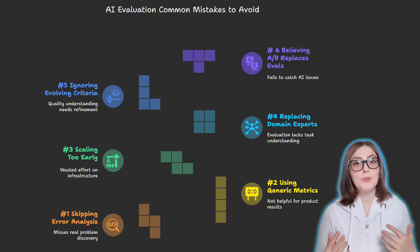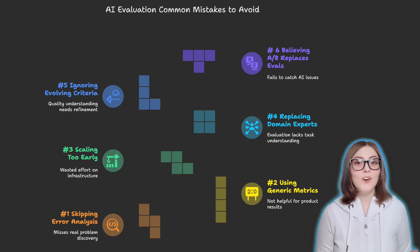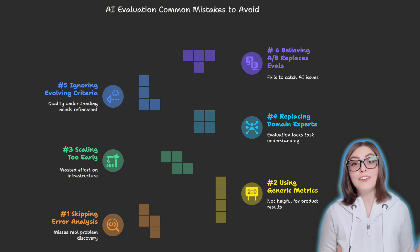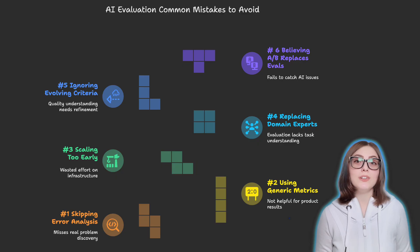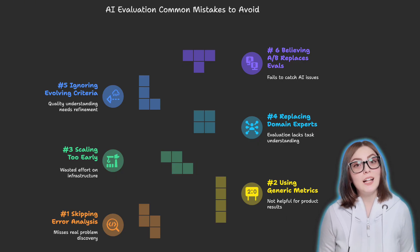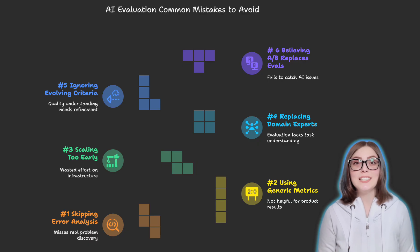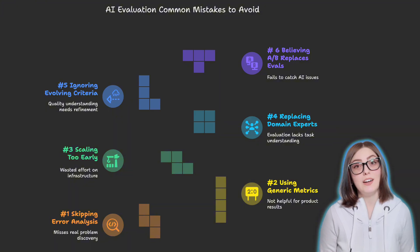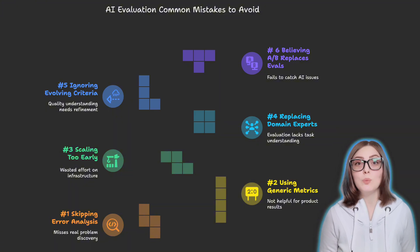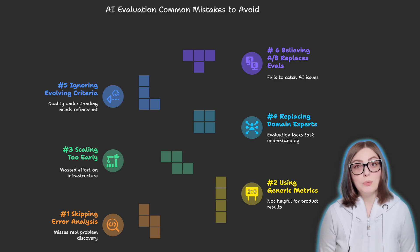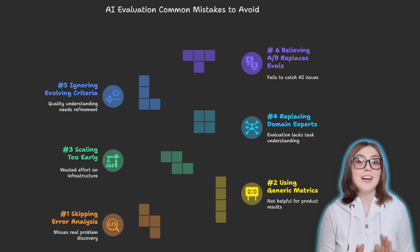Now I want to share some of the most common mistakes in evaluating the effectiveness of AI within products. First, skipping error analysis — when you jump straight into generic failure categories, you miss real problems you would otherwise discover at the error analysis stage. Second, using off-the-shelf metrics as your primary evaluators — generic benchmark scores are okay if you're generally curious about an LLM model, but they're not helpful when evaluating actual results inside your product. Third, trying to scale evaluation infrastructure before establishing clear pass-fail criteria — this leads to wasted effort. Fourth, thinking your software engineering team can replace domain experts — evaluation should be driven by people who fully understand the task.